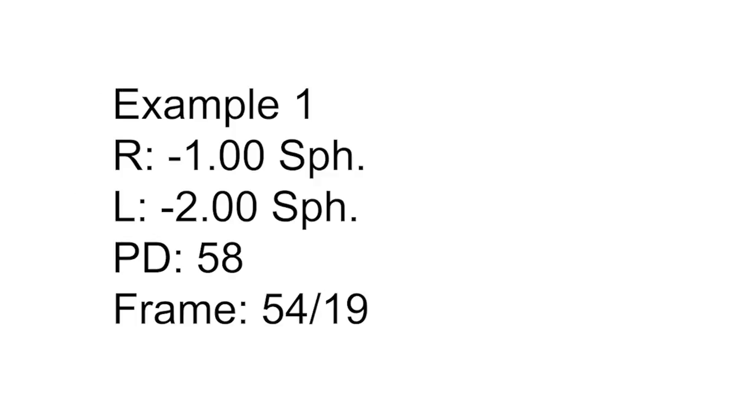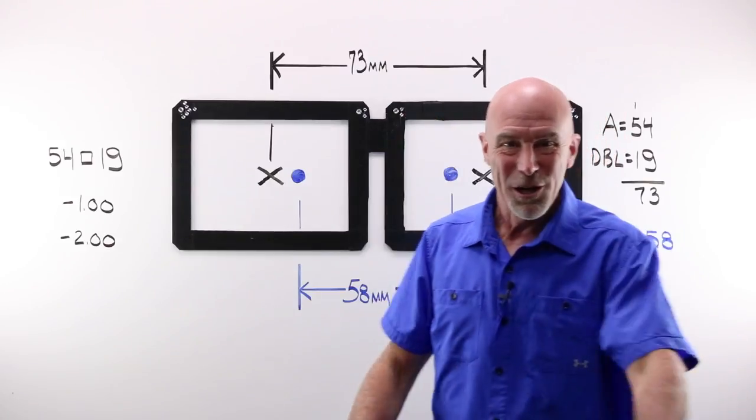For this example, we will have a right of minus one sphere, a left of minus two sphere, a customer PD of 58, in a frame with the measurements of 54-19. Let's get going.